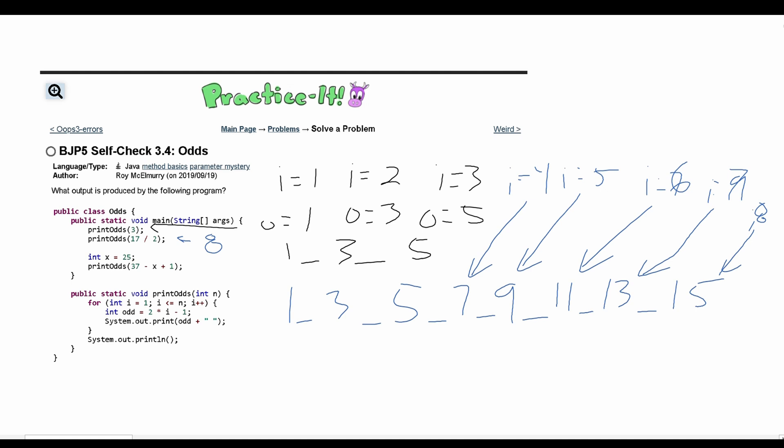Lastly, we have this right here we have to look at. That is going to be, we're passing in 37 minus 25. That's going to give us 12 plus 1, so this is equivalent to 13.